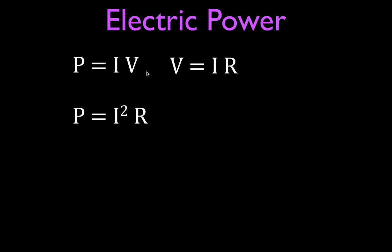This third equation we can get from now taking Ohm's law, solving it for I, I is equal to V divided by R, substituting that into here for I, and the power is equal to the voltage squared divided by the resistance. So these are the three equations that you use to calculate electric power.